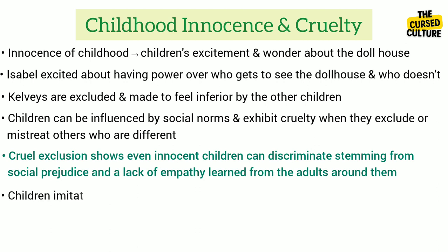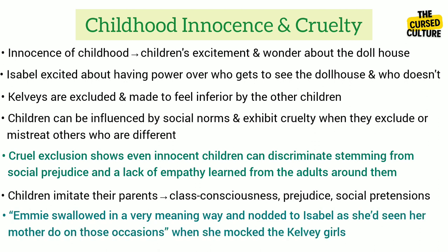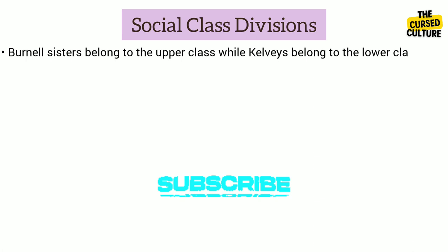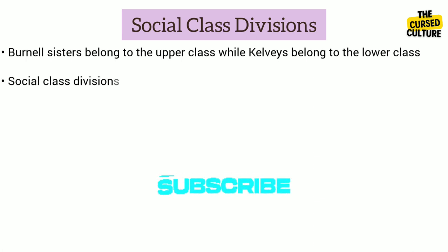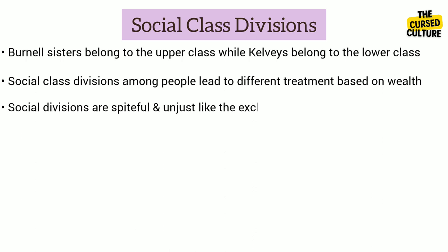The children imitate and absorb from their parents the class consciousness, prejudice, and social pretensions — similar to how Emmy swallowed in a very meaningful way and nodded to Isabel as she'd seen her mother do on those occasions when she mocked the Kelvy girls. In the story, there are two main social classes: the Burnell sisters, who have a beautiful dollhouse, belong to the upper class, while the Kelvies, who are considered poor and common, belong to the lower class. The story highlights how social class can create divisions among people, leading to different treatment based on wealth or social status. It shows that these divisions can be spiteful and unjust, such as the exclusion and prejudice the Kelvies face because of their lower social class.